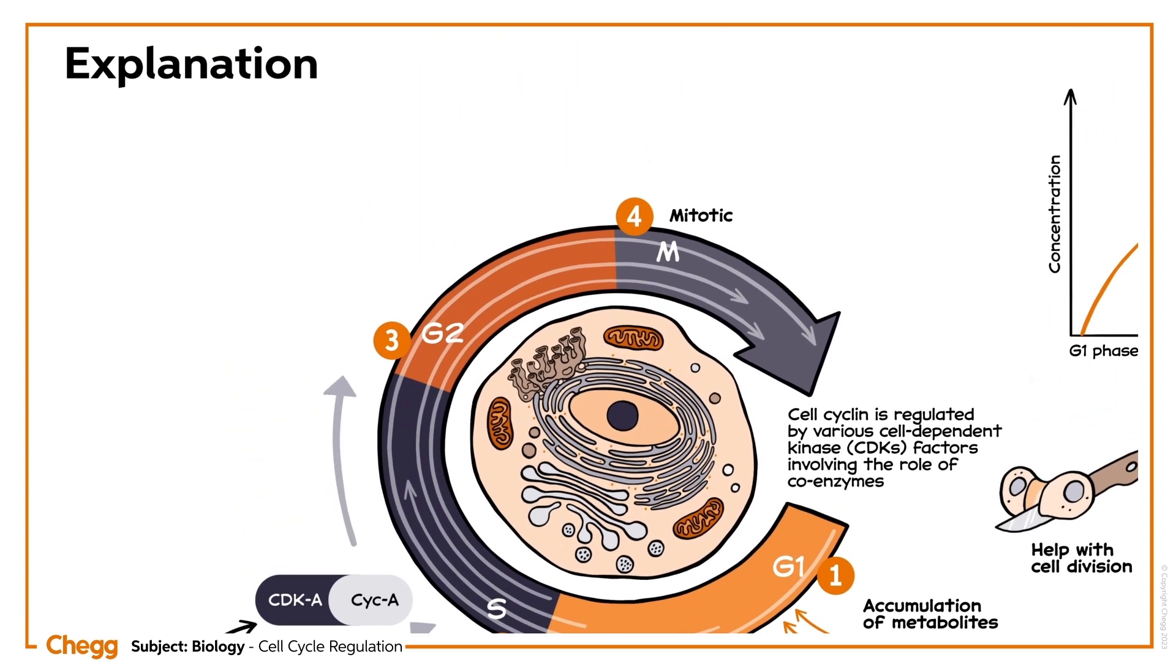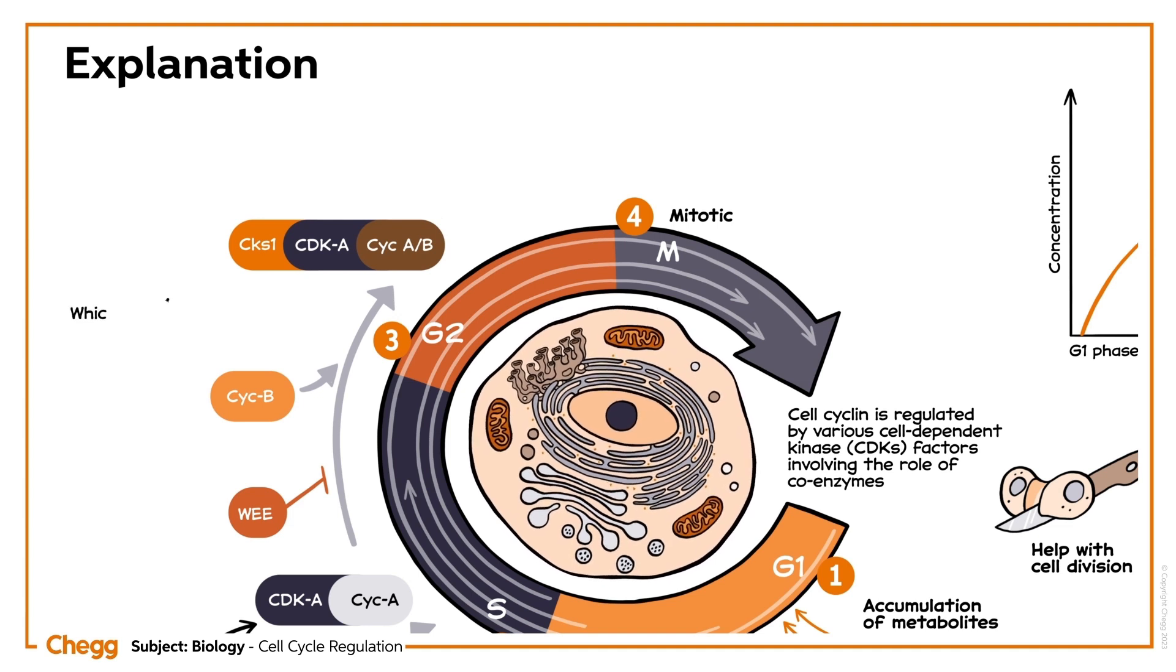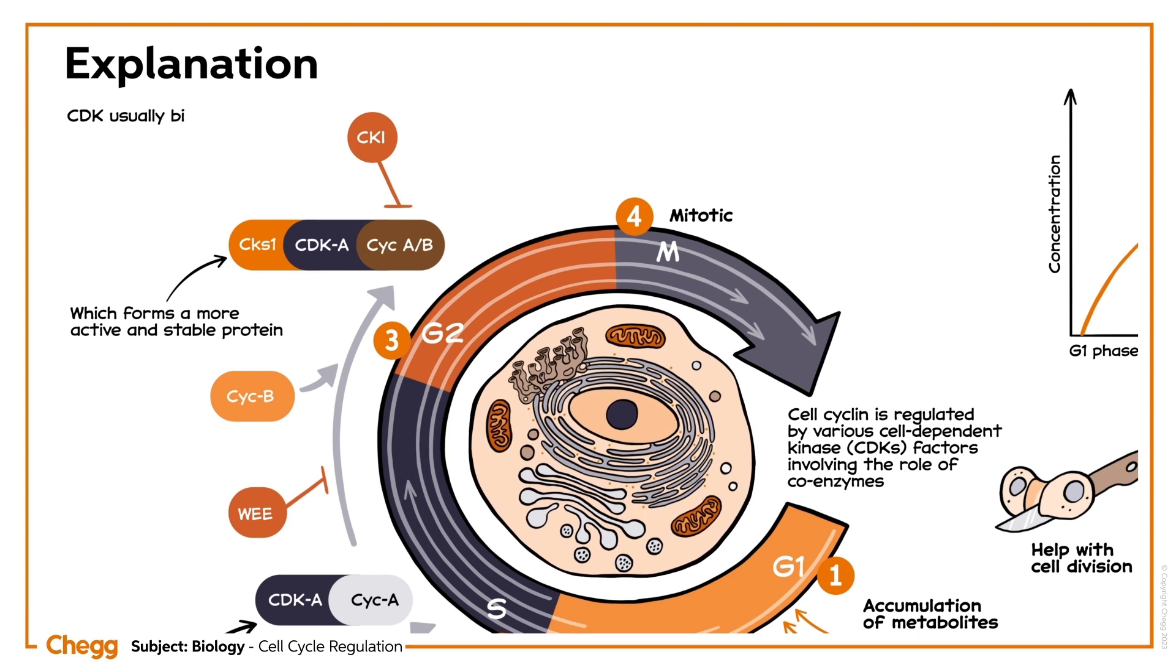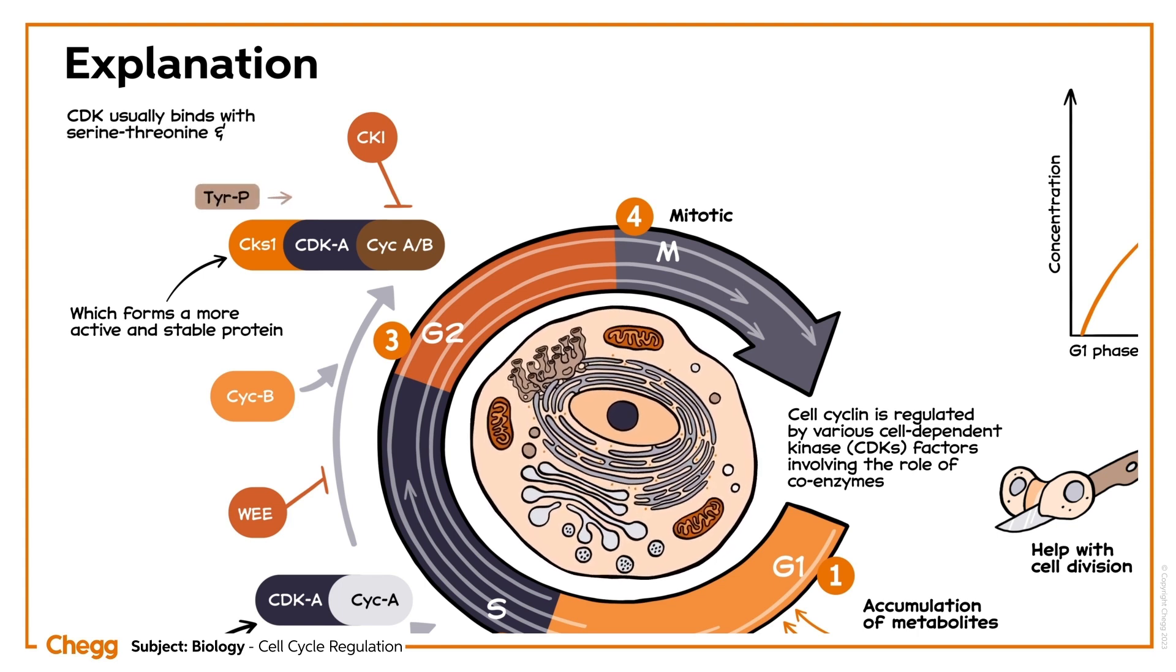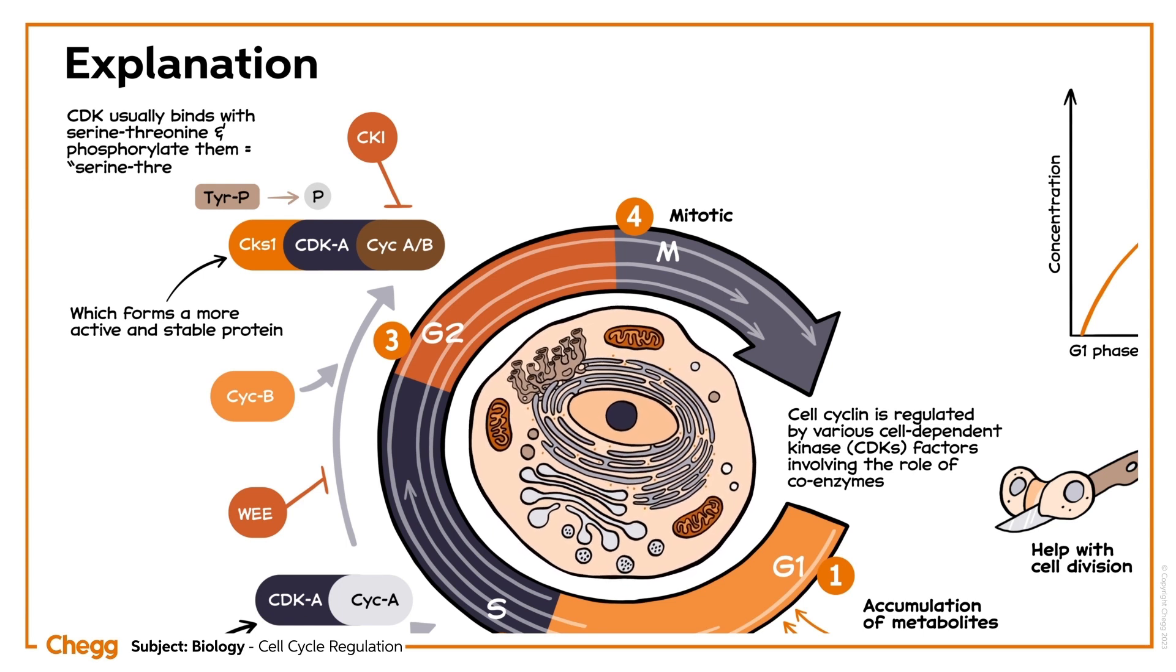The CDK alone is less active than the CDK-cyclin complex, which forms a more active and stable protein. The CDK will usually bind with serine threonine and phosphorylate them. Hence, it is also called a serine threonine kinase.